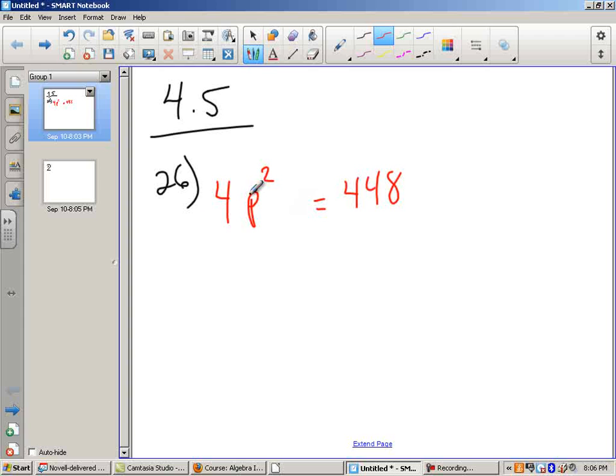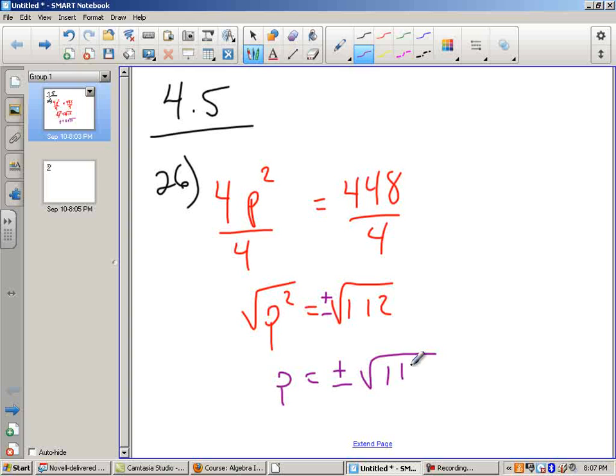A couple steps. The first step here is just to get p squared alone, so we'll divide by 4. We'll get p squared equals, if I divide 448 by 4, I'll get 112. And then all I have left to do is get rid of my square by taking square root. But I know that when I do that, I have to have my plus and minus, so plus and minus the square root of 112.